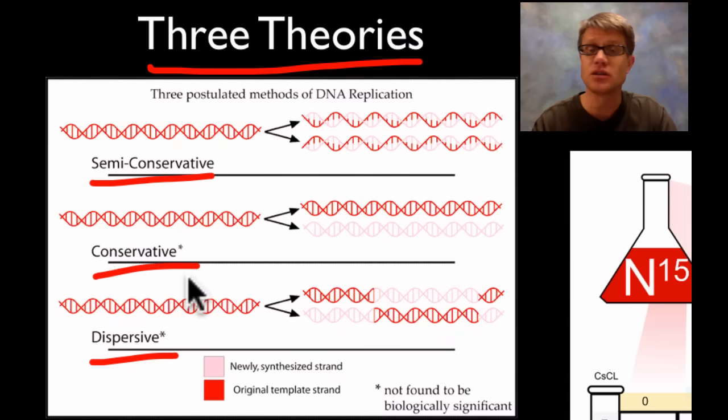But there were other scientists who believed in a conservative theory that that first DNA remains intact and it kind of makes a photocopy of itself. And then some believed that there was kind of a combination of conservative and semi-conservative that chunks of it were being split between the two. And this had to do with, they thought, the histone proteins and how the DNA wrapped around it.